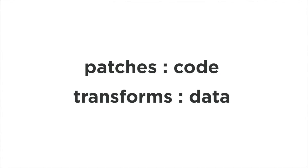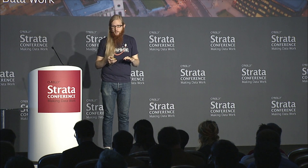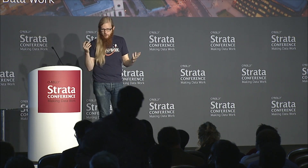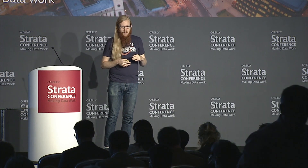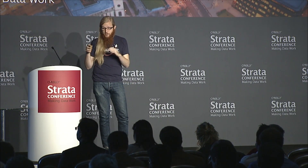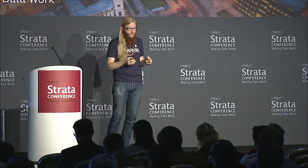The fundamental difference between Git and DAT — and DAT is just my prototype of what I'd like to see more of in the future — is that patches are to code what transforms are to data. With code, you send patches around, and every patch is written by a human. It's very rare that you have a script writing other programs. Most of the time people are writing code by hand, artisanally, because code is very difficult and brittle.